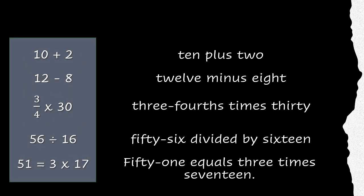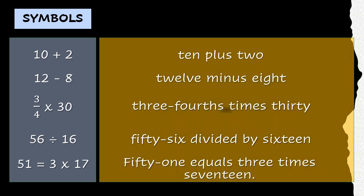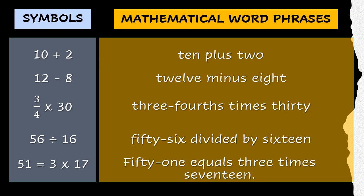Can you tell something about this group? As you can see, all of them are written using symbols. How about those to the right? There is no symbol at all. Therefore, we can say that these are mathematical word phrases and the last one being a sentence. Let's have a closer look at each of these examples.